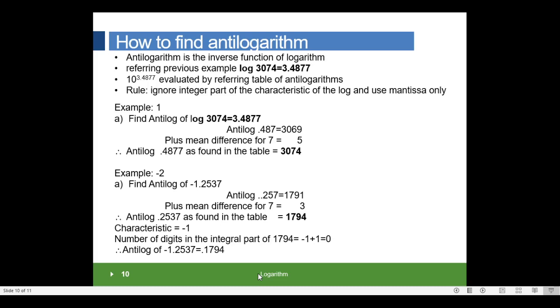For example, to find the antilog of 3.4877. The antilog of 0.487 returns 3069. Plus the mean difference for 7 is 5. The total of 0.4877 as found in the table is 3074.